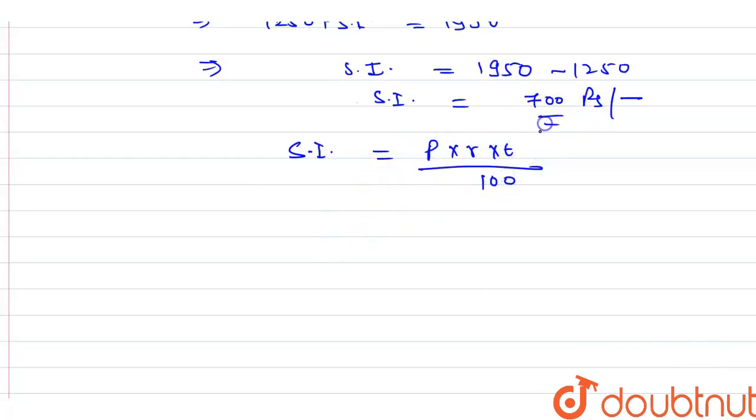What is the simple interest? As we have found, it is 700 rupees. And what is the principal amount? Principal amount is 1250 rupees. And rate is 16%. We have to find the time, and this is 100.